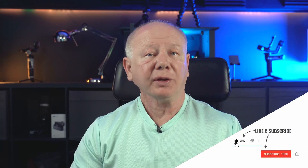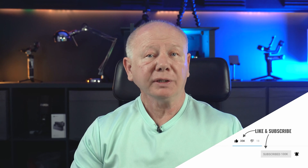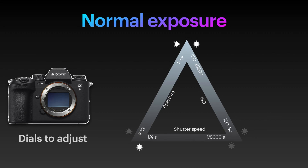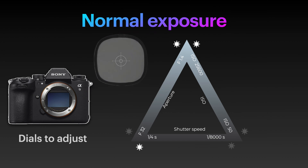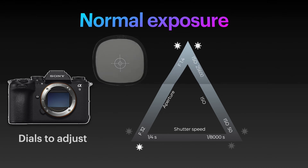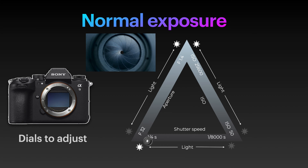These three dials all affect each other and the goal is to create a mid-bright image. Using the internal light meter, this is where the term 18% gray comes from. If we change from a small aperture like f32 to a large aperture like f1.4, this lets more light onto the sensor so the image gets brighter.